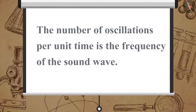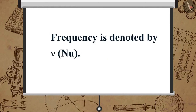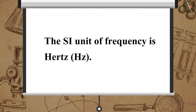The number of oscillations per unit time is the frequency of the sound wave. Frequency is denoted by nu. The SI unit of frequency is hertz. The relationship is: nu is equal to 1 by T.